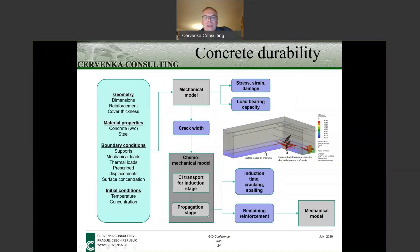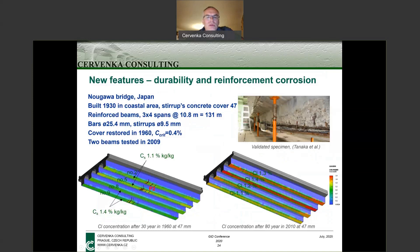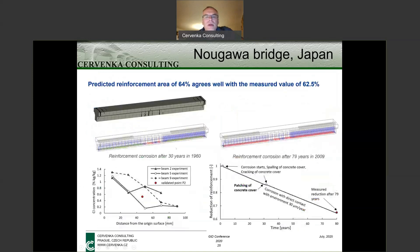I would like to show a new development: a durability model developed in Athena — a combined chemo-mechanical model. It allows us to define special boundary conditions corresponding to environmental loads, such as chloride content on the surface. Because we know the location of each reinforcement bar, we can determine in time the propagation of chlorides. When chlorides reach the reinforcement, we can also account for the presence of cracks — where cracks are located, chlorides penetrate faster and corrosion starts earlier, as shown by the red areas. This figure shows a very good match with experimental data from Japan.